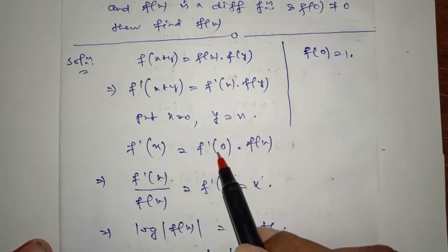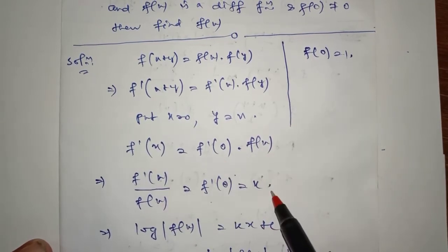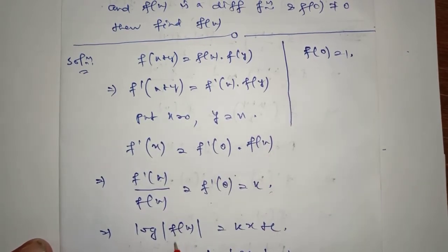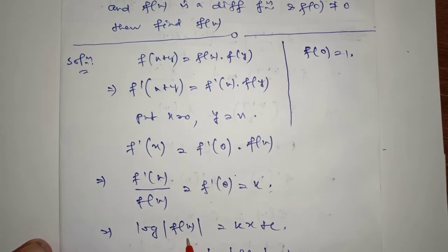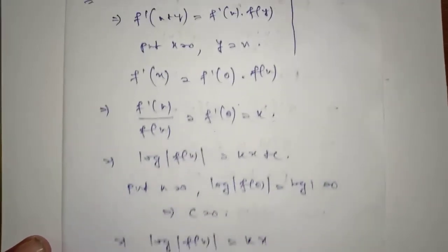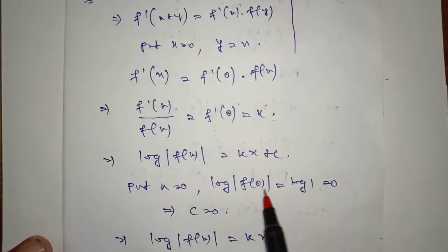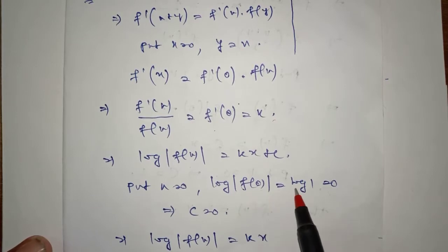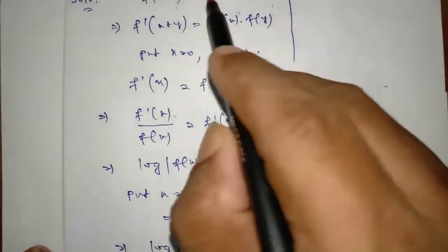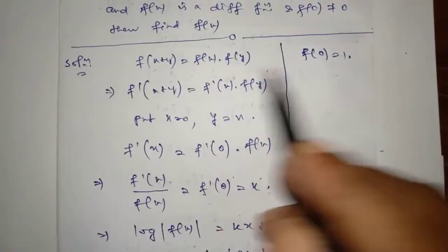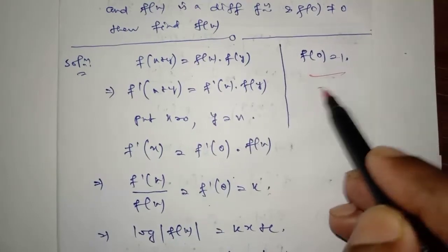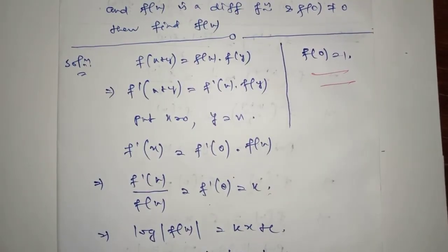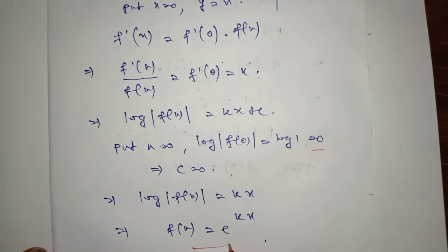f(x) ko neeche rakh do — f'(0) kya hoga? So that is k. To isko integrate karo: log of f(x) = kx + c. Abb x ki jagah pe 0 put karo: log of f(0) ka value kya hai? So f(0) = 1, log 1 ka value 0, so c = 0. Obviously you can say f(x) = e^(kx). This is very very important for JEE.